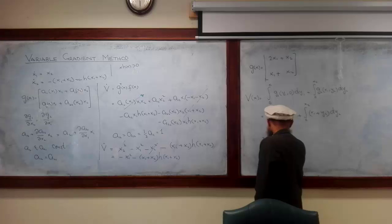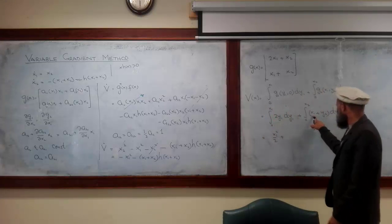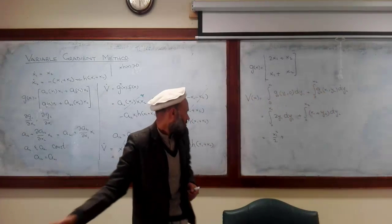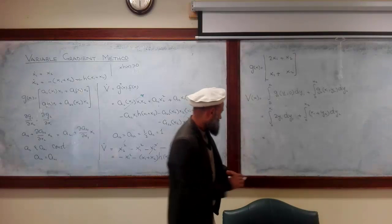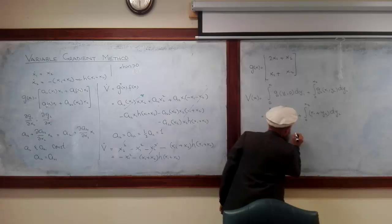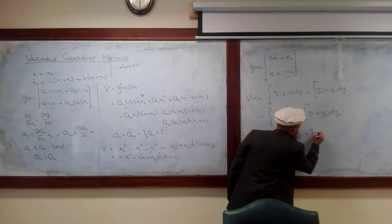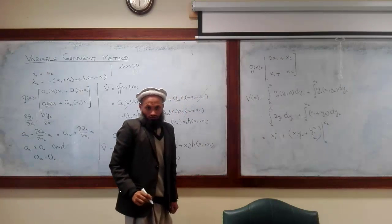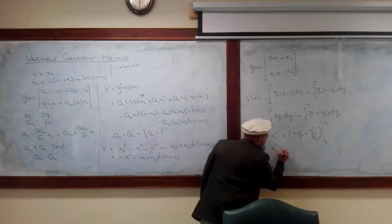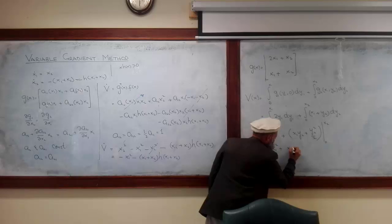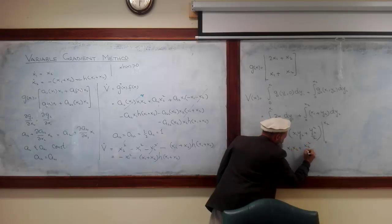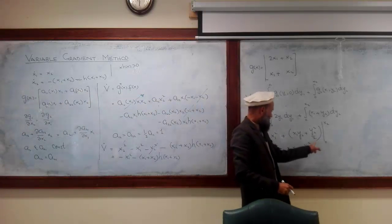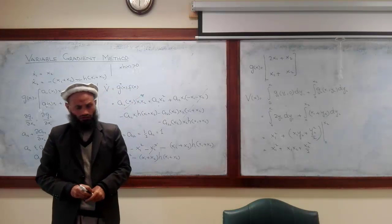What do we get over there? X1 into y2. Here we have x1 y2 plus y2 square by 2. Substitute this limit of integration: x1 x2 plus x2 square by 2. And if we substitute the lower limit, that is equal to 0.